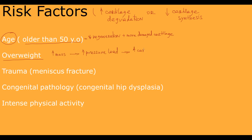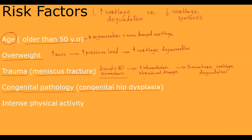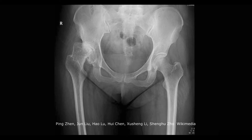The second risk factor is excessive weight — the more overweight a person is, the higher the pressure load on cartilage and the higher cartilage degeneration. The third is trauma, for example a meniscus fracture of the knee joint: trauma disrupts normal biomechanics of the joint, leading to intra-articular structural damage and premature cartilage degradation. Similarly, congenital pathology such as congenital hip dysplasia disrupts normal joint biomechanics and causes premature cartilage degradation.